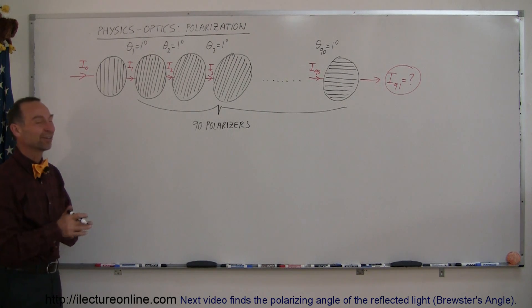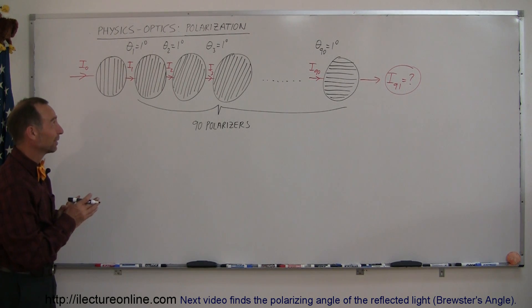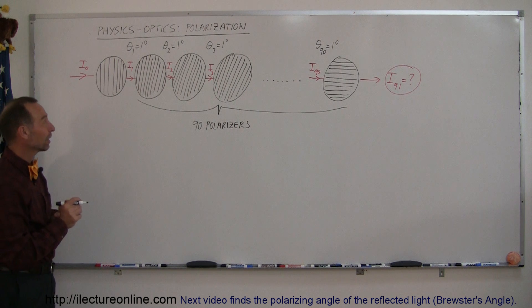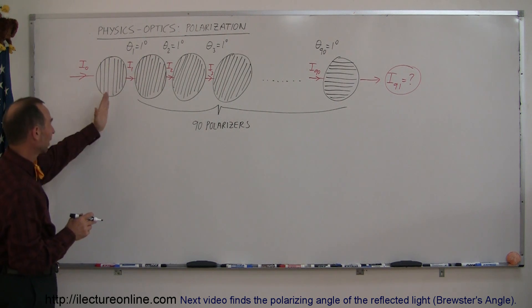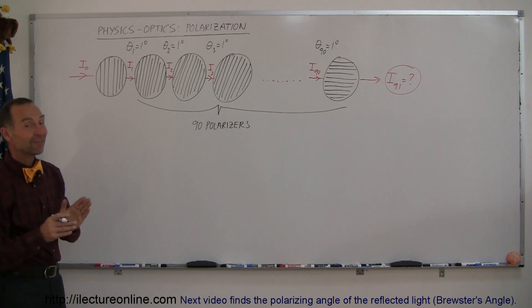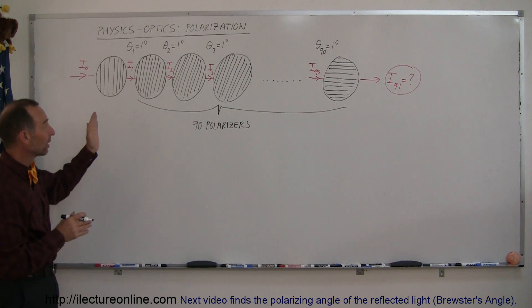Welcome to iLecture Online and here is a really interesting problem dealing with polarizers. Let's say that we have our first polarizer that's vertical, and then we have 90 additional polarizers, one after the other.